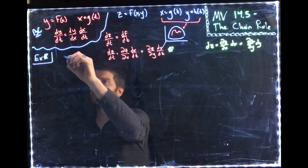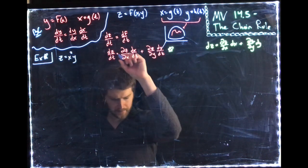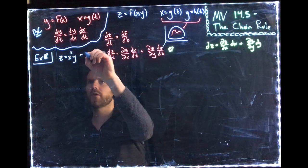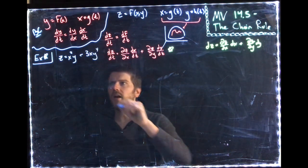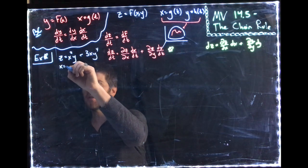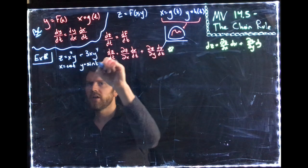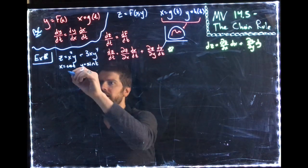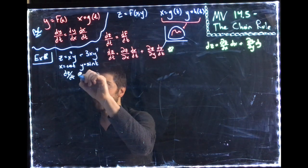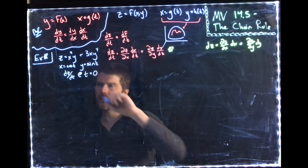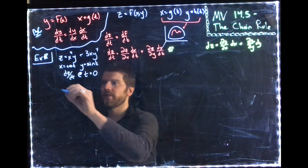So here we're going to have z equals x squared y plus 3xy to the fourth. And in this case, x is going to be equal to cosine t and y is going to be equal to sine t. And we'd like to find dz/dt when t is equal to zero. All right. Well, we're going to go ahead and apply this to find dz/dt.